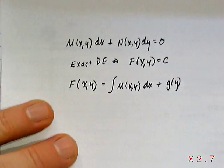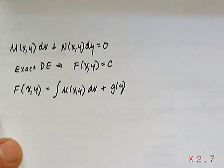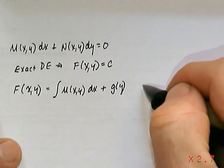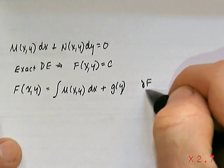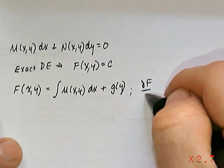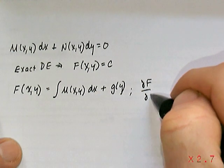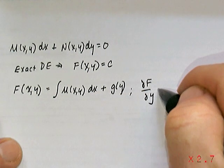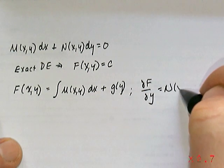Now the reason we can say that is because the equation is exact, we know that for that particular F, the partial of F with respect to y has to be equal to the N(x,y) function.